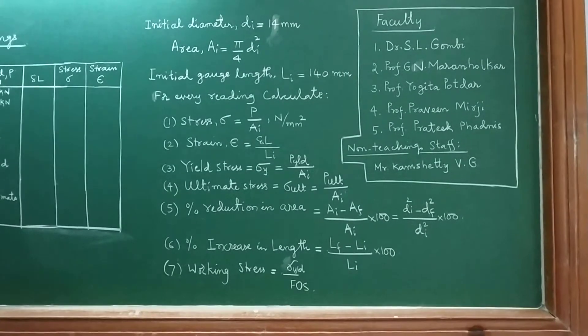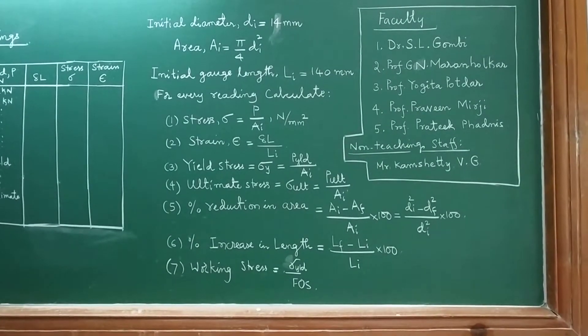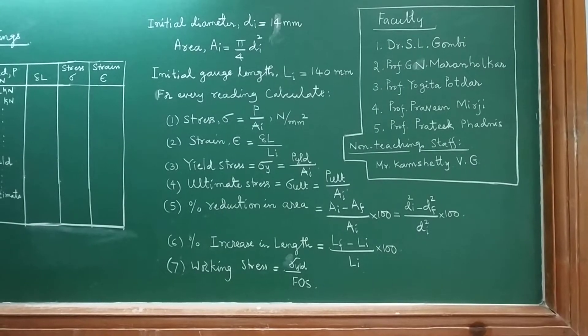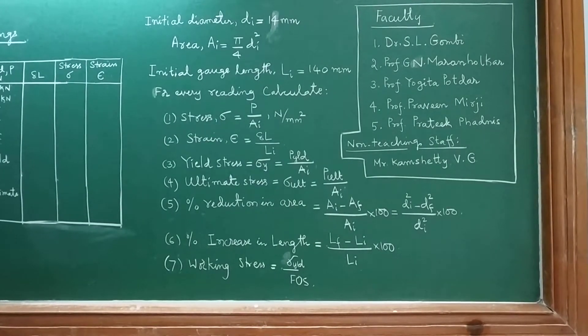Similarly, ultimate stress σ ultimate is calculated by the ratio of ultimate load upon initial area. Then we have to calculate percentage reduction in area.